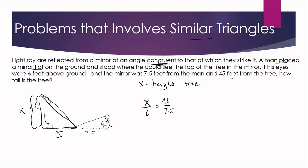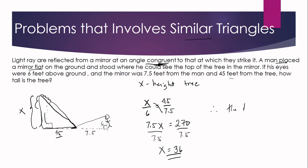Our proportionality equation is X/6 = 45/7.5. Cross-multiplying gives 7.5X = 45 × 6 = 270. To solve for X, we divide both sides by 7.5: X = 270 ÷ 7.5 = 36. Therefore, the tree is 36 feet tall.